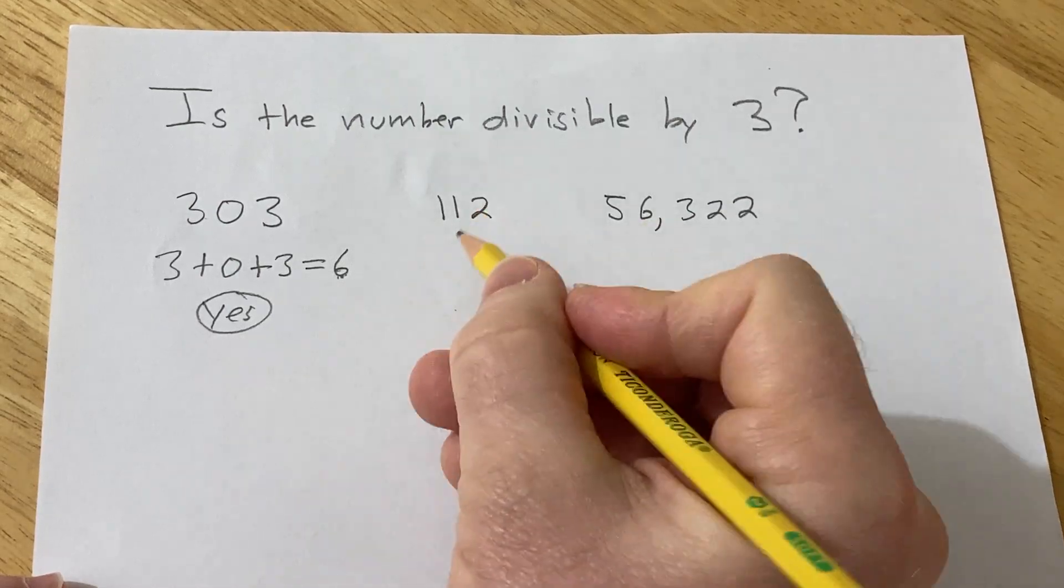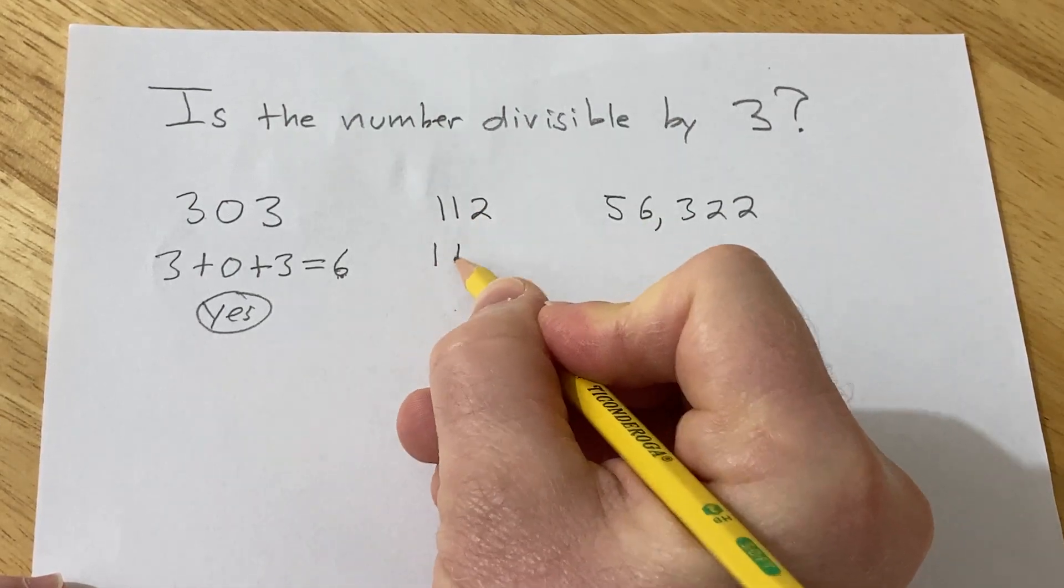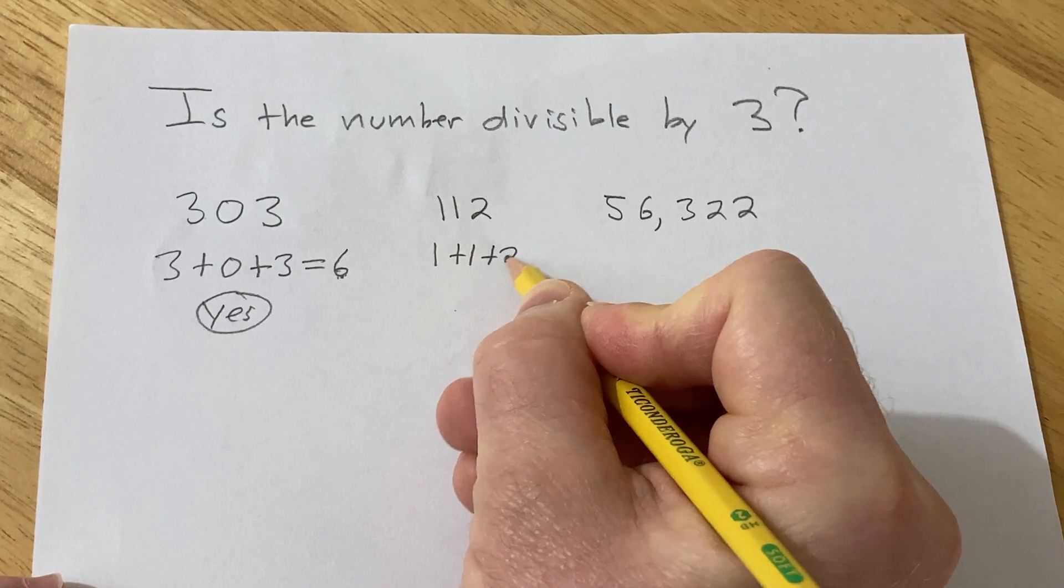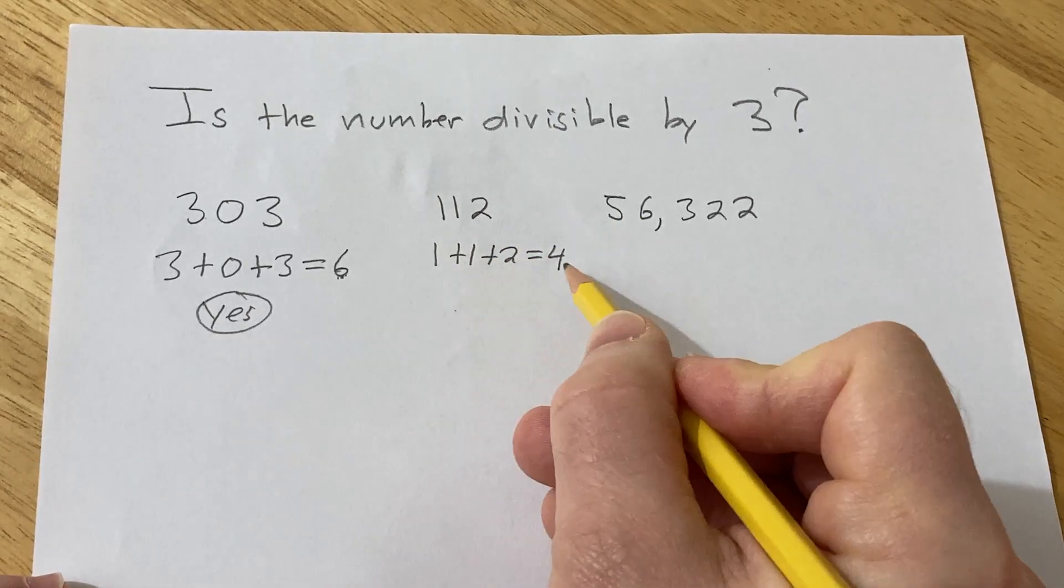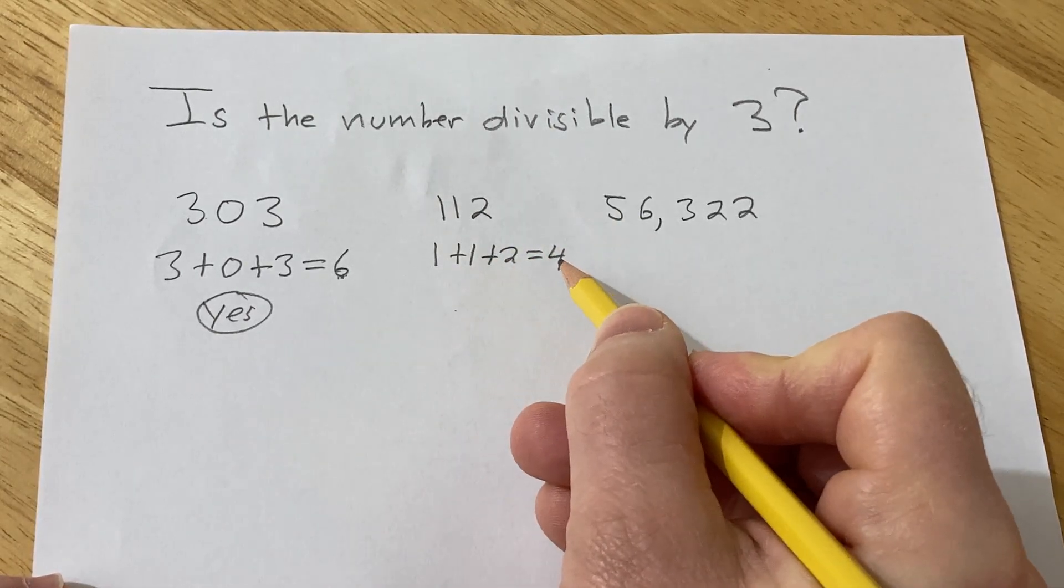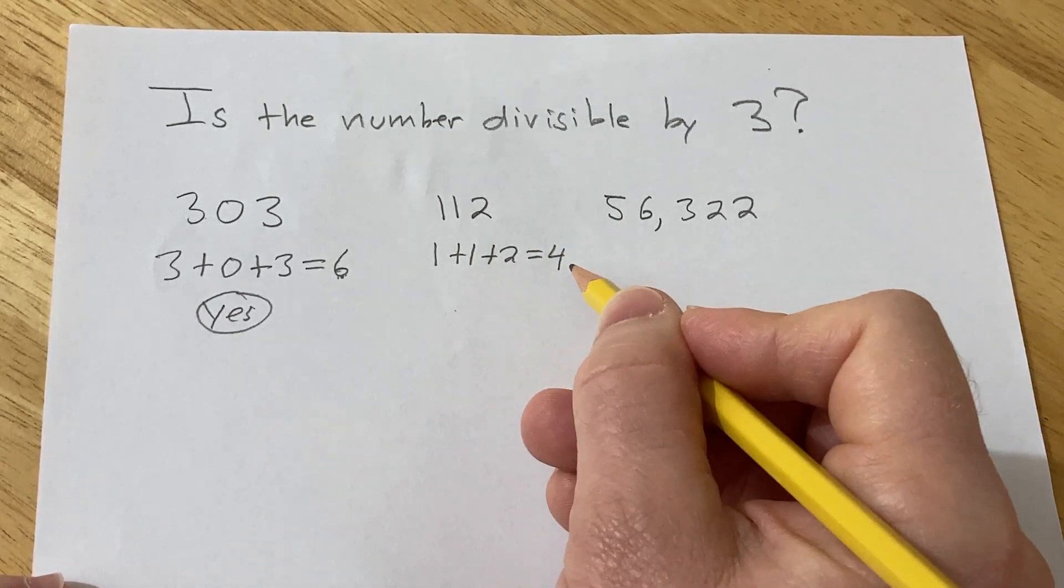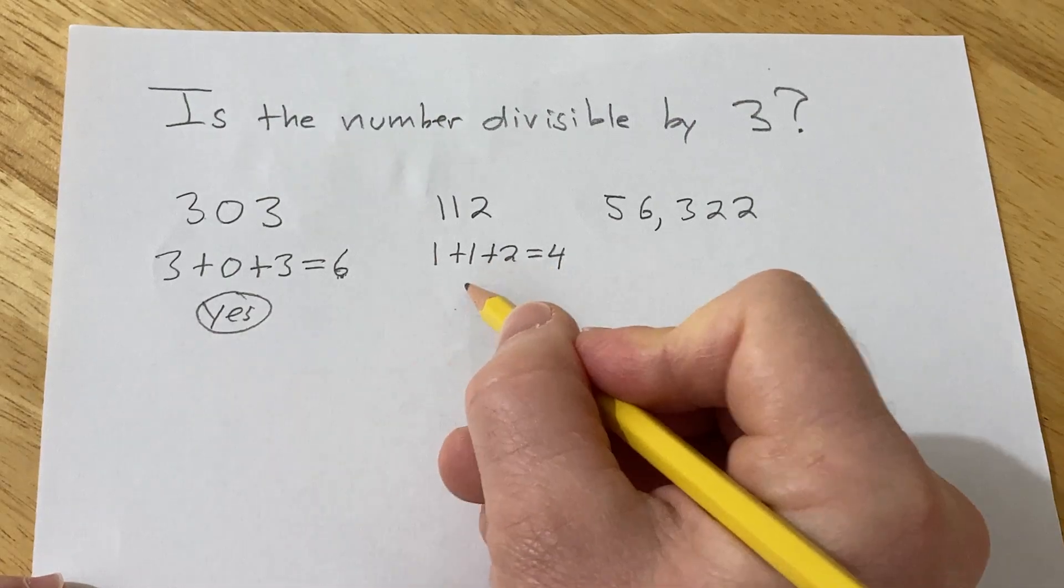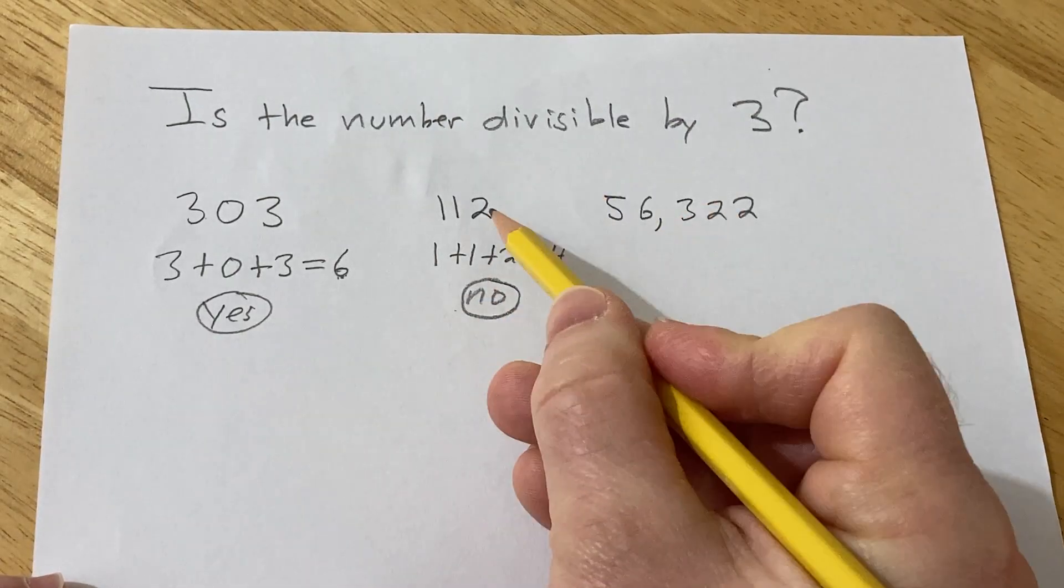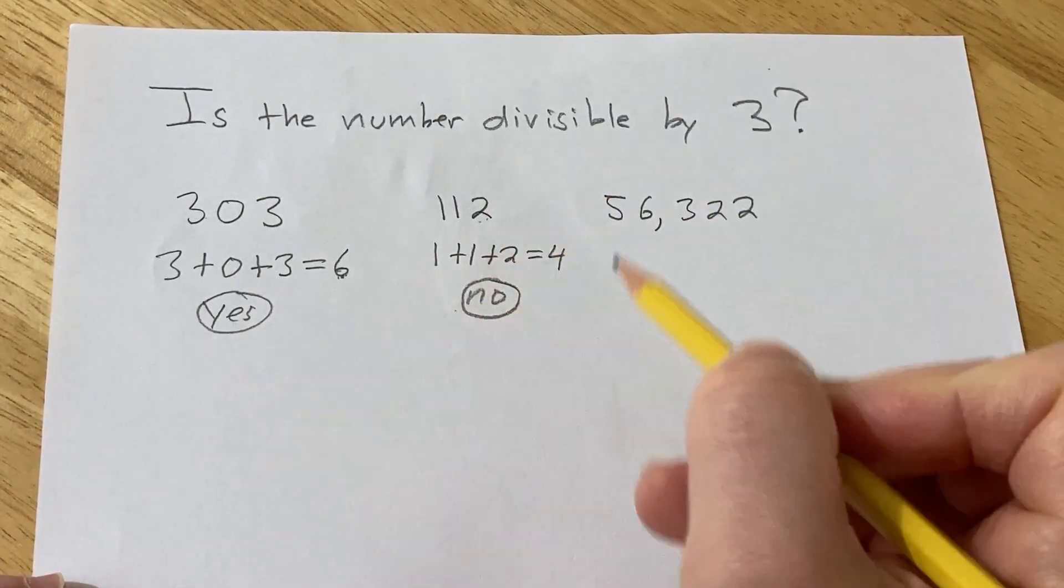Let's do this one. So here we would do 1 plus 1 plus 2, and that's equal to 2 plus 2, which is 4. 4 is not divisible by 3. 3 does not go into 4 an even number of times. It goes in once and there's a remainder, so the answer is no. That means this number is also not divisible by 3.